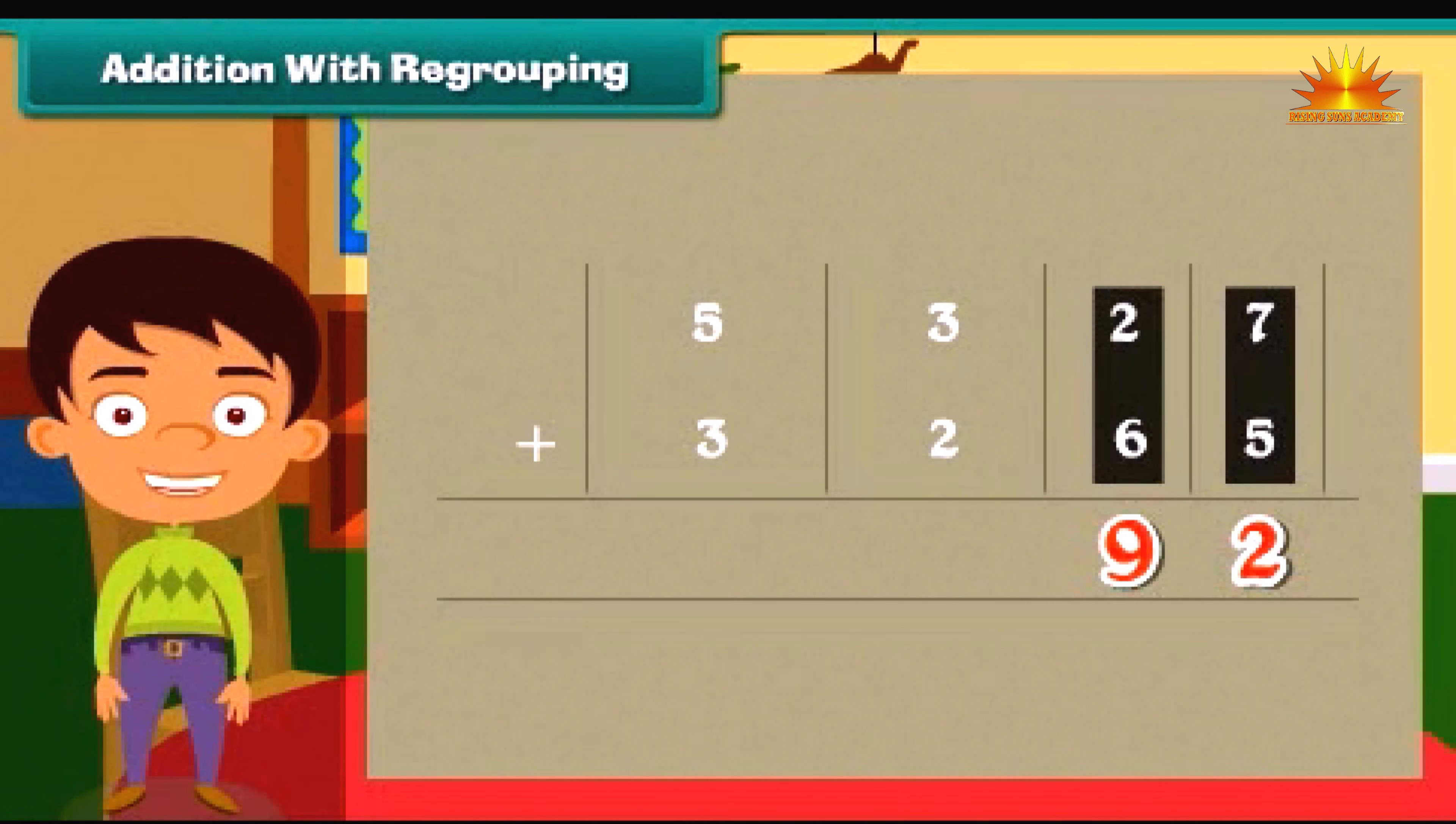Now we add hundreds. Three plus two is five. Write five below in hundreds line.